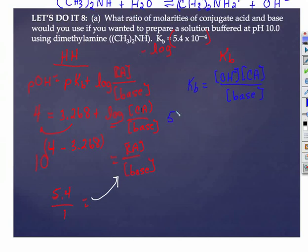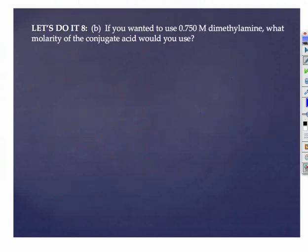My Kb was given as 5.4 times 10 to the minus 4th. My OH, if my pOH is 4, my OH is 1 times 10 to the minus 4th, right, if there's no decimal place. There's a 1 there in front. Times my conjugate acid over my base. Remember, this is my base. That's my conjugate acid. And we're going to get the same thing. You still end up with that 5.4 to 1 ratio.